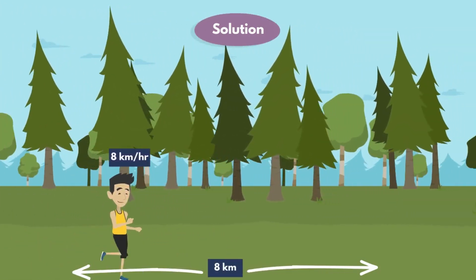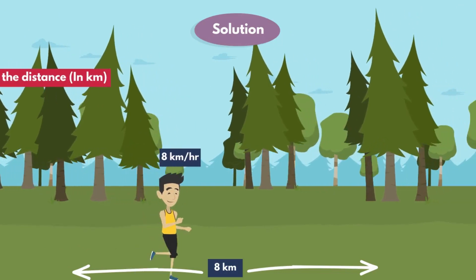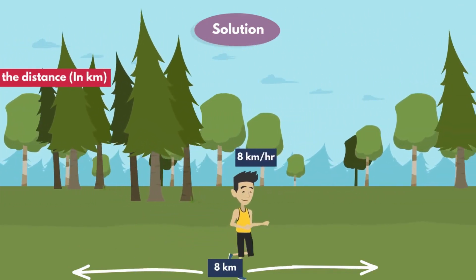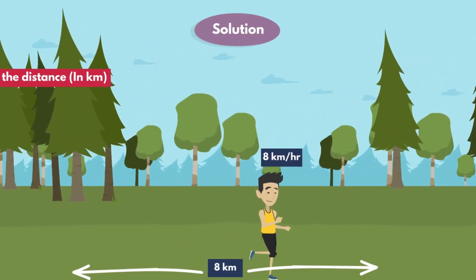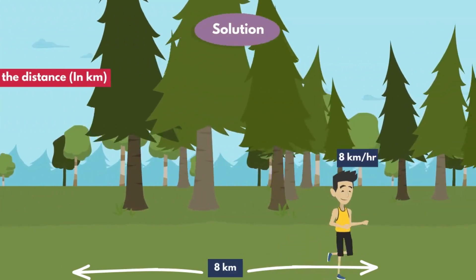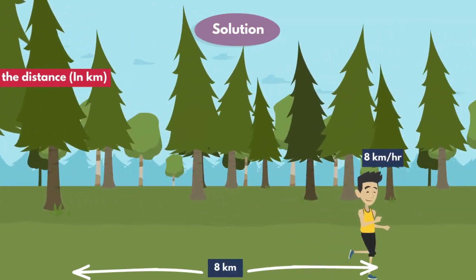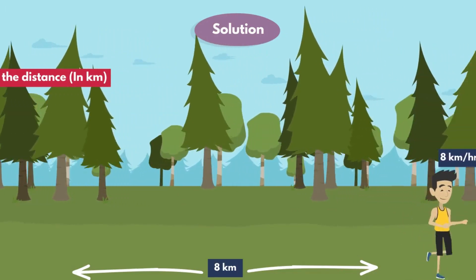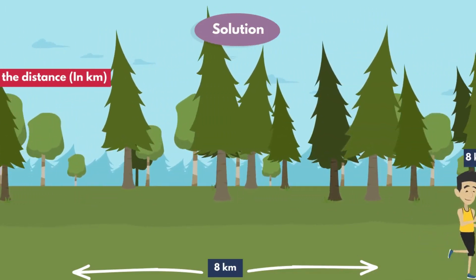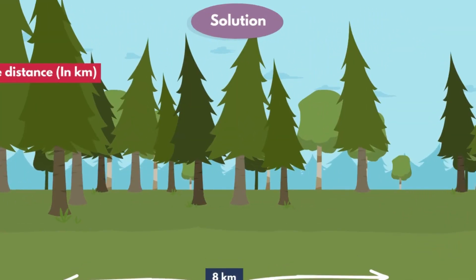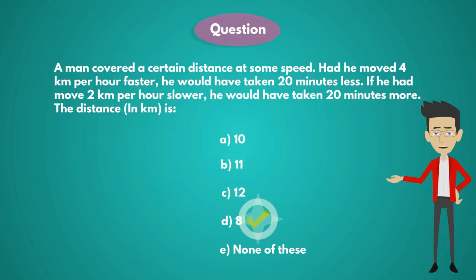Now, in the question they are asking the distance in kilometers. So here, it is clear that the distance traveled by the man is 8 km. So the answer is Option D: 8.